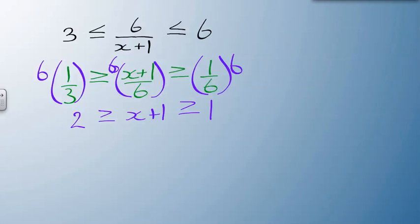Subtract the 1 from all sides, get x all by itself. I end up with 1 is greater than x is greater than 0. Almost done. I just need to write it in set notation to get my final answer.